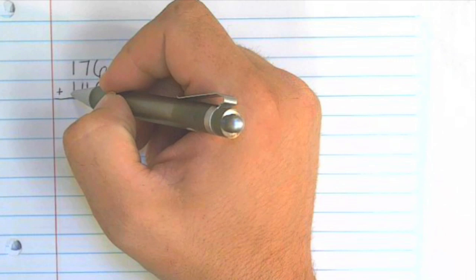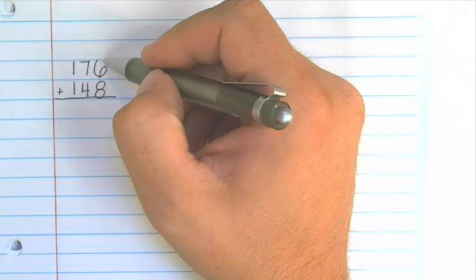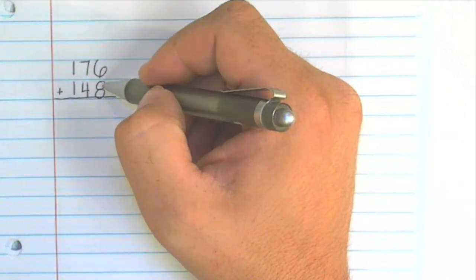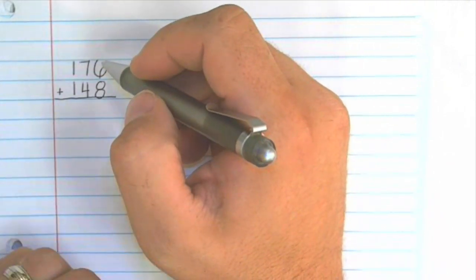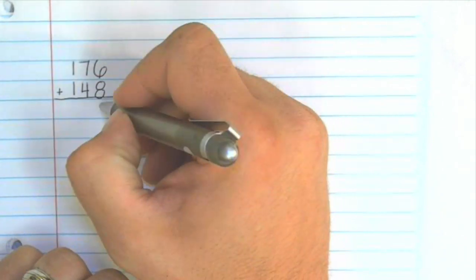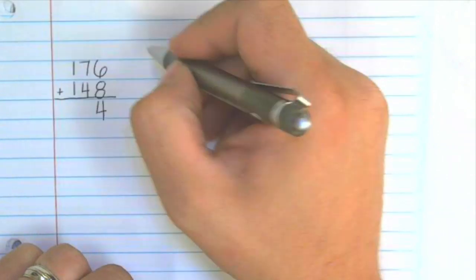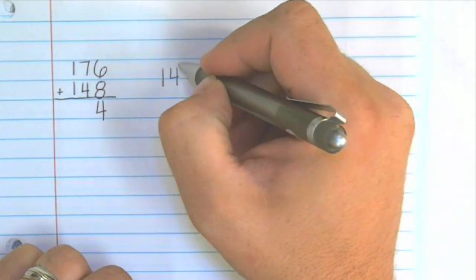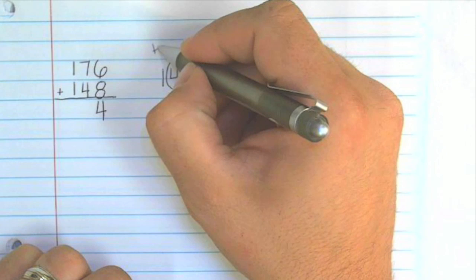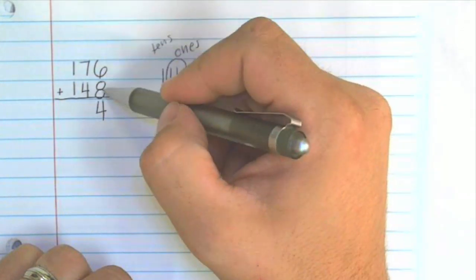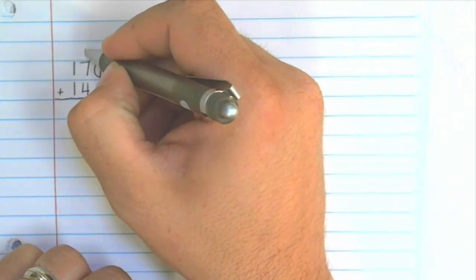Whenever we do addition of more than one digit we want to start always in the ones column and add those numbers together. So six plus eight is 14. So we'll put the four down here in the ones column because if you look at 14 the four is in the ones column and this one is in the tens column. So we put the four in this column and we carry the 10 over here to the tens column.